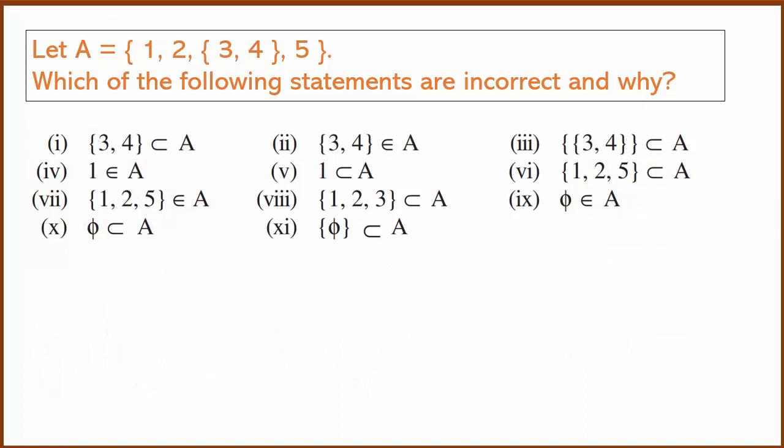The question involves set A which has four elements: 1, 2, 3, 4 and 5. The question is: which of the following statements are incorrect and why?